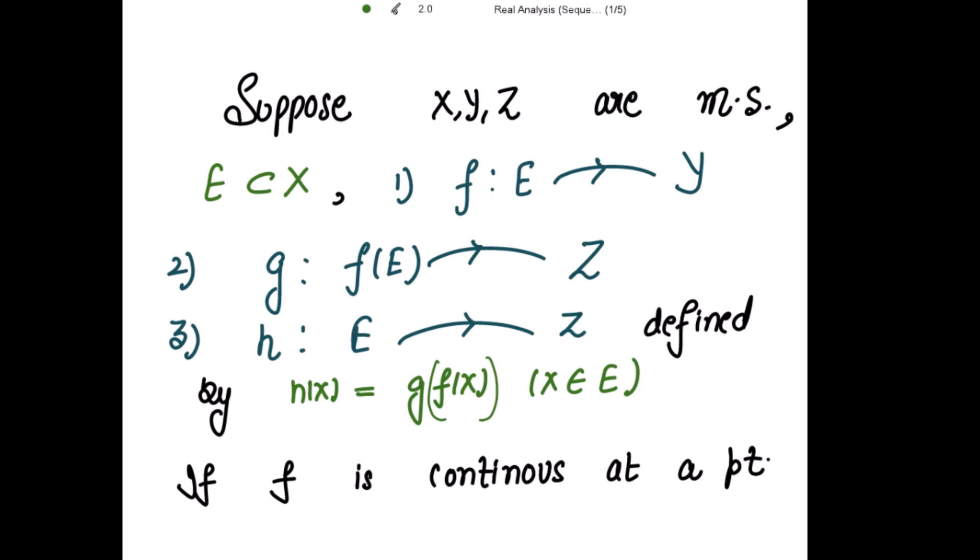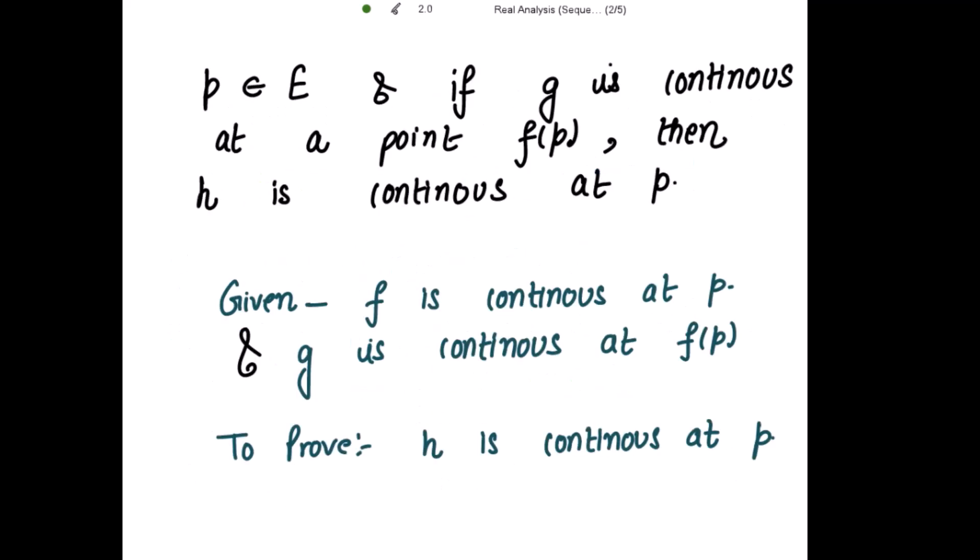So if f is continuous at a point p belonging to E and if g is continuous at a point f(p), then we have to show that h is continuous at p. So what is given to us? f is continuous at p. Secondly, g is continuous at f(p) and we have to prove that h is continuous at p.